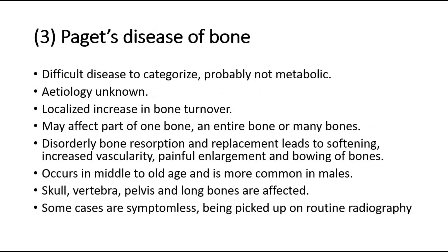Third, Paget's disease of the bone. This is a difficult disease to categorize, probably not metabolic. Its etiology is unknown. There is localized increase in bone turnover, and it may affect part of one bone, an entire bone, or many bones. Disorderly bone resorption and replacement leads to softening, increased vascularity, painful enlargement, and bowing of bones.